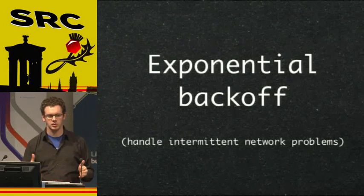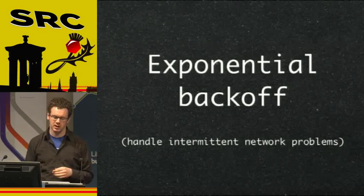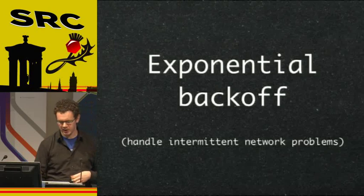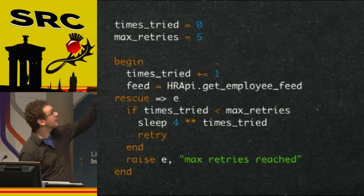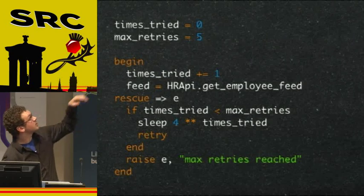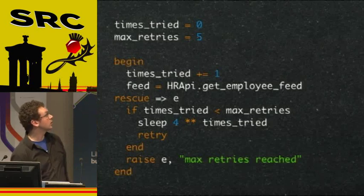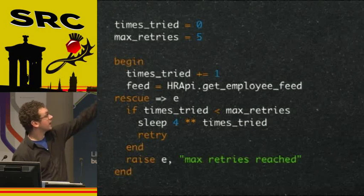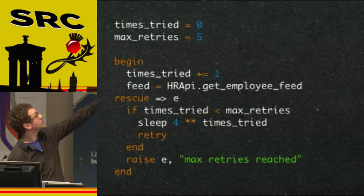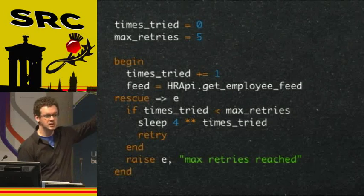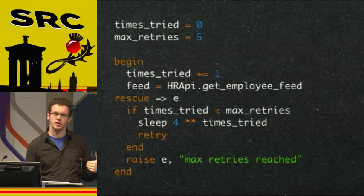Basically, if it fails, try again in two seconds; if that fails, try again in eight or 16 — the time between retries gets exponentially larger until you cut it off. The code keeps track of the number of tries and max retries, rescues an error in the get_employee_feed call, checks if we've reached the maximum retries, and if not, calls the retry keyword after a sleep, which takes you back to the begin block. It's a naive implementation of exponential retrying that would allow a server to recover. With the sleep statement, it's not speeding things up if you want concurrent processing.